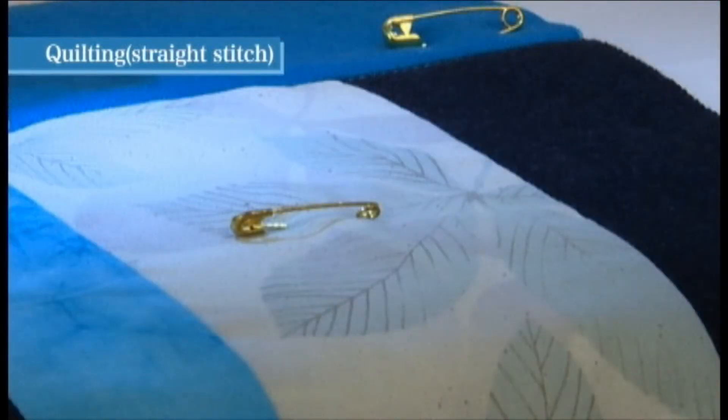Place the top layer of fabric with patchwork or applique over the cotton batting and backing material and secure with pins or basting stitches.